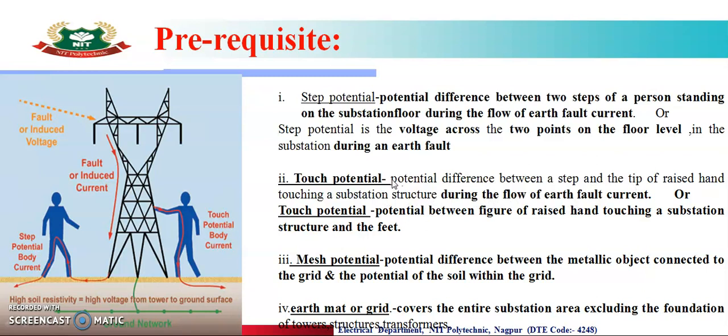वैसे हमने देखा था mesh potential — mesh potential भी एक potential difference है, किसके बीच का? Metallic object connected to the grid and the potential of the soil within the grid. And the fourth one is the earth matte or grid — earth matte और earth grid में हम पूरे substation का entire area लेते हैं, सिर्फ उसमें tower का foundation और structure of transformer जैसे सब exclude करके जो भी entire area of substation है, इसको बोलते हैं earth matte और earth grid।